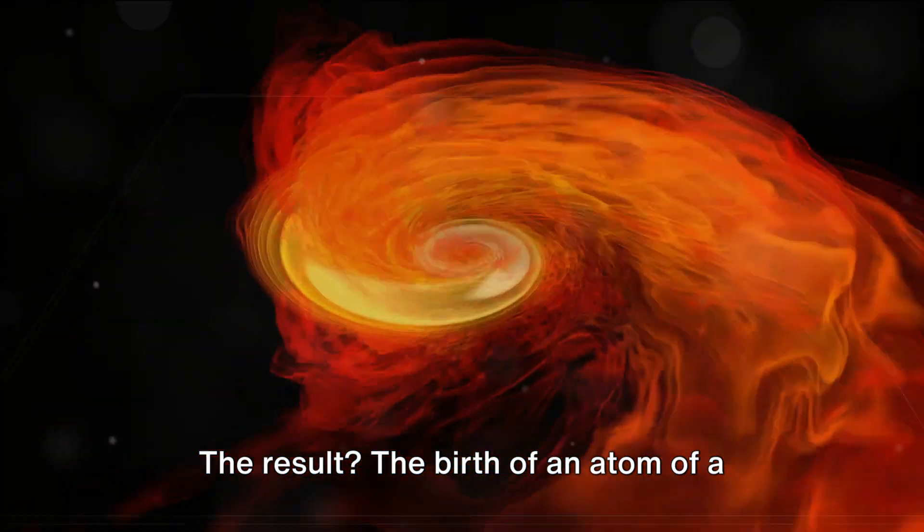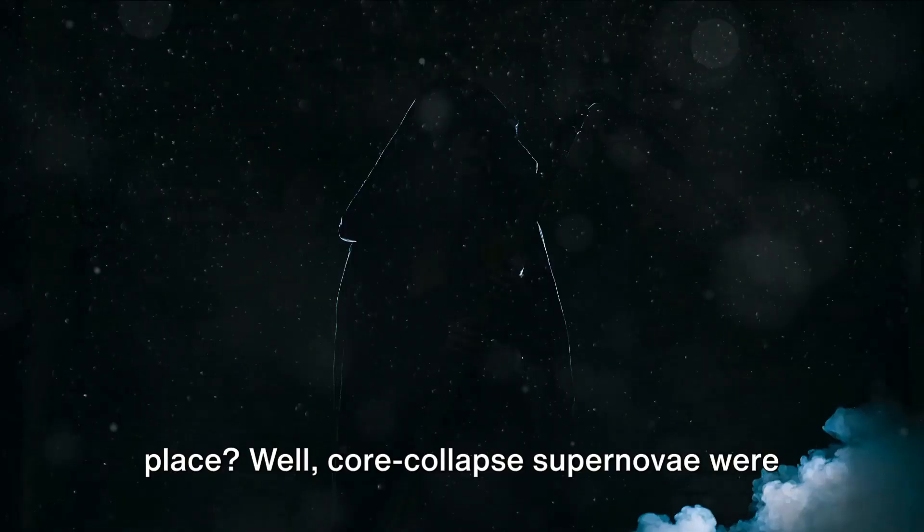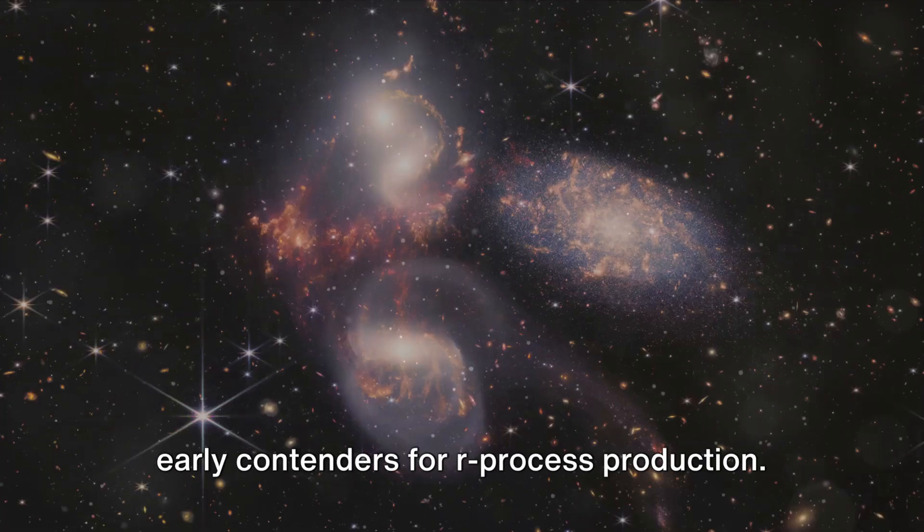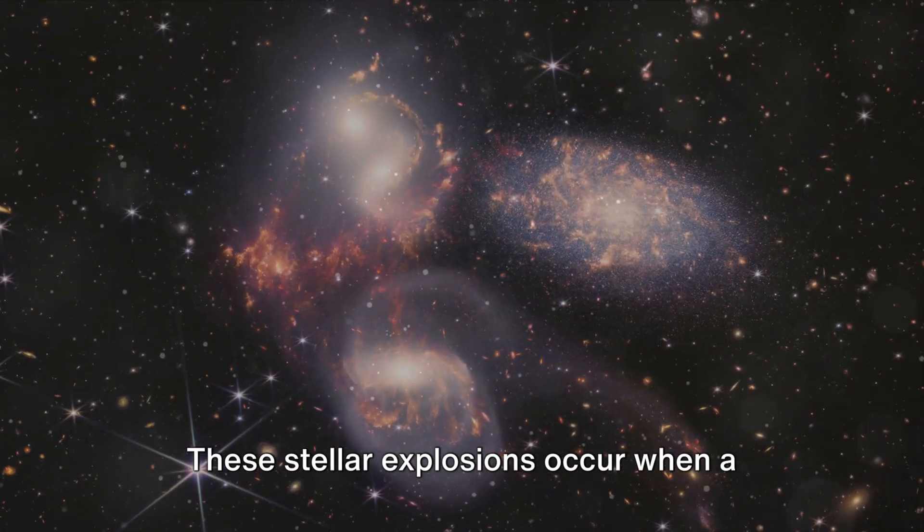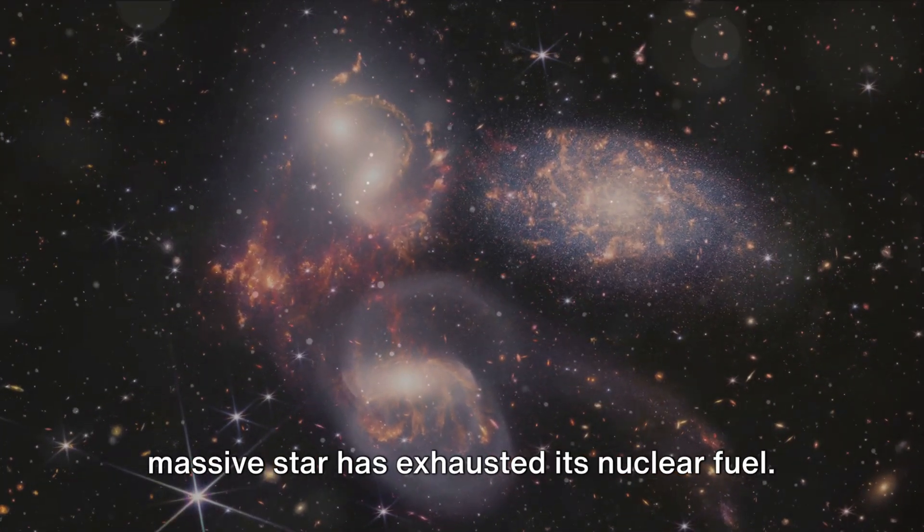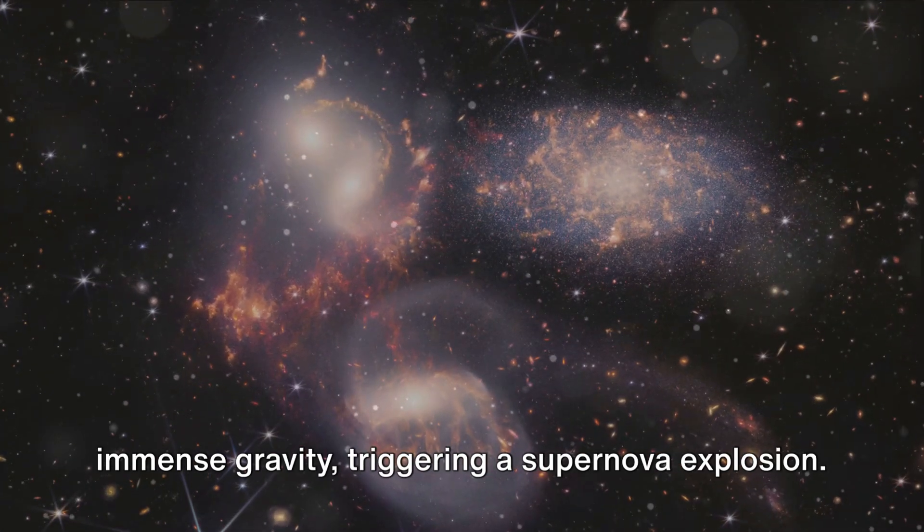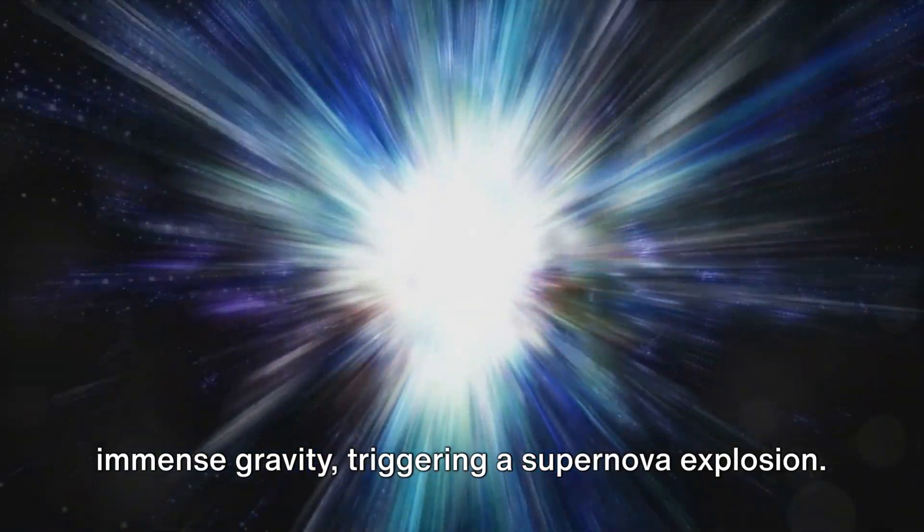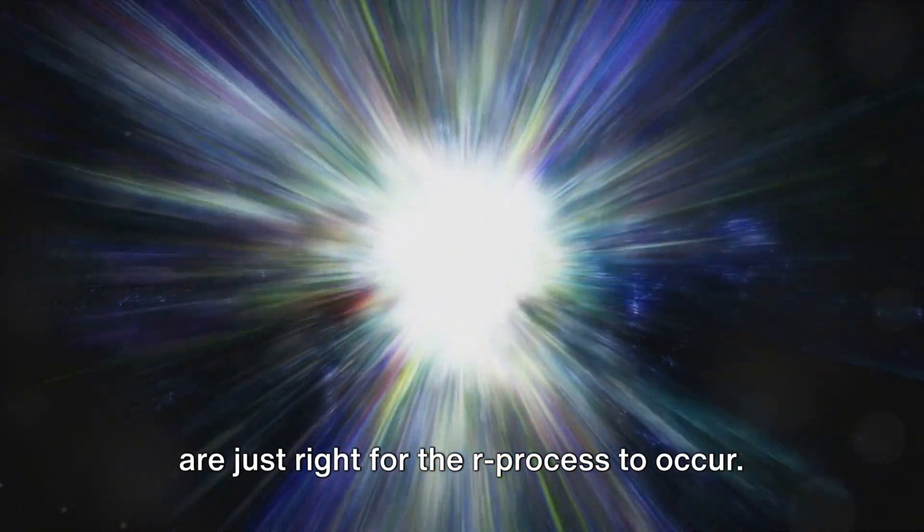The result? The birth of an atom of a heavier element. But where does this atomic dance take place? Well, core collapse supernovae were early contenders for R process production. These stellar explosions occur when a massive star has exhausted its nuclear fuel. The star's core collapses under its own immense gravity, triggering a supernova explosion. In the mayhem that follows, conditions are just right for the R process to occur.